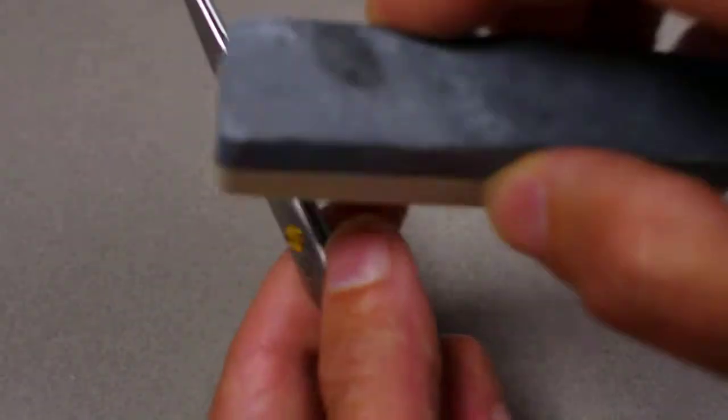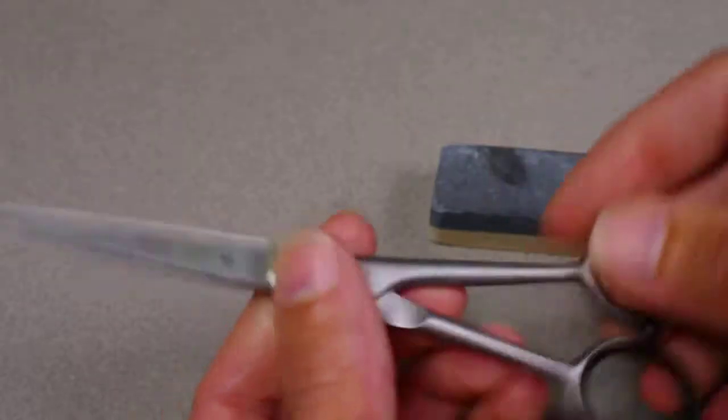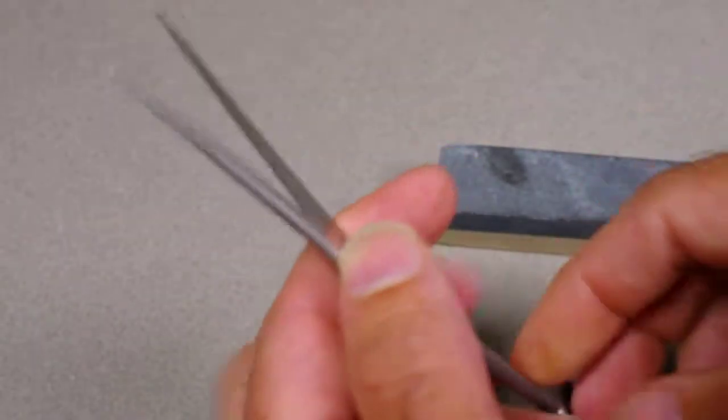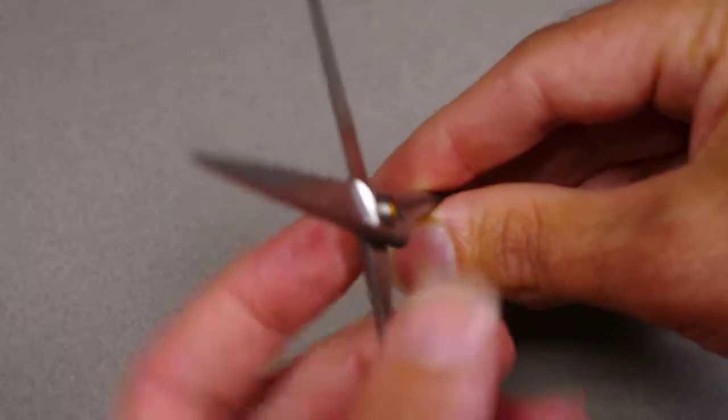If you start on the joint and finish at the end, most of the time you'll rip off the end and won't give the end as much stone mileage as it needs.